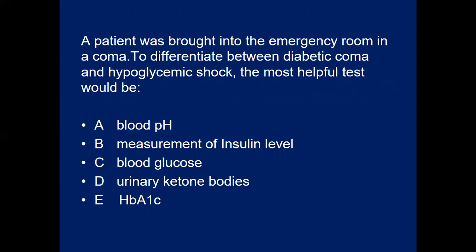In another scenario: a patient is brought to the emergency room in a coma. To differentiate between diabetic coma and hypoglycemic coma, the most helpful test is blood glucose. If glucose is low, treat for hypoglycemia; if elevated, differentiate between diabetic ketoacidosis or hyperosmolar non-ketotic coma. In the next lecture, we will discuss complications and more MCQ scenarios.